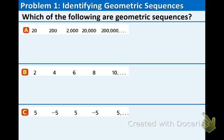Let's look at our example. Which of the following are geometric sequences? What you want to do is just look for the pattern — draw your arrows. We've done something similar like this in the past. We are multiplying by 10 each time. Yes, this is the same number, so that means this is a common ratio, and the ratio is going to be 10. That's the number we keep multiplying by, and yes, this is a geometric sequence.